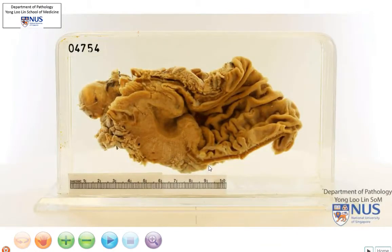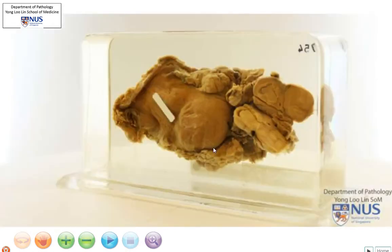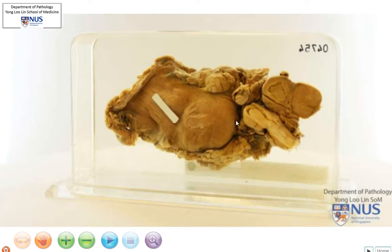To summarize: we have a fleshy ulcerating tumor at the gastric antrum with heaped-up overhanging edges. This tumor has invaded beyond the muscularis propria into the subserosa, and has also metastasized to the regional lymph nodes.